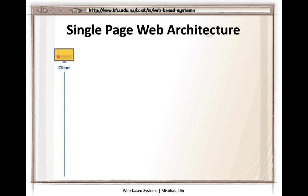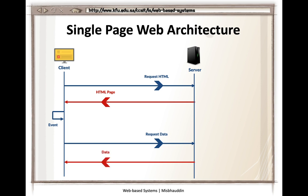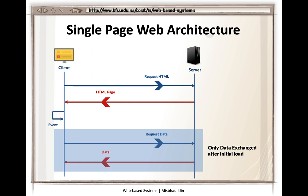In a single page architecture, the first request returns a complete HTML page with all the assets — CSS files, JavaScript files, and image files needed for the first time. The next time an event happens, a request is made but this time you're only requesting data. The size of this data is in bytes — not kilobytes or megabytes — so it's much smaller and your page will be faster.